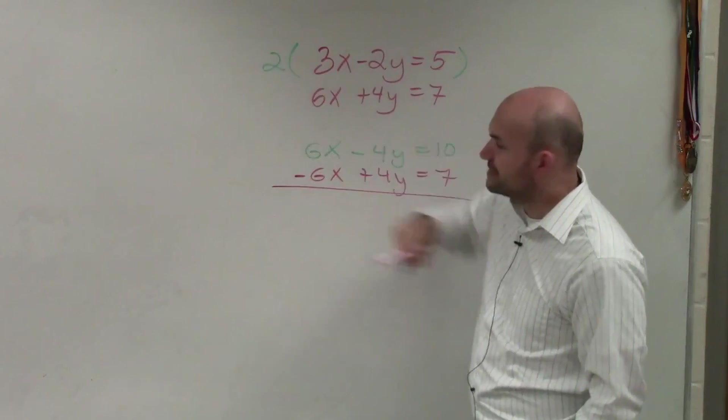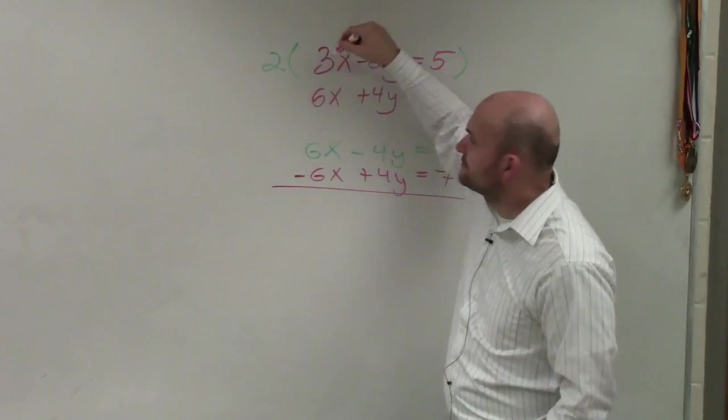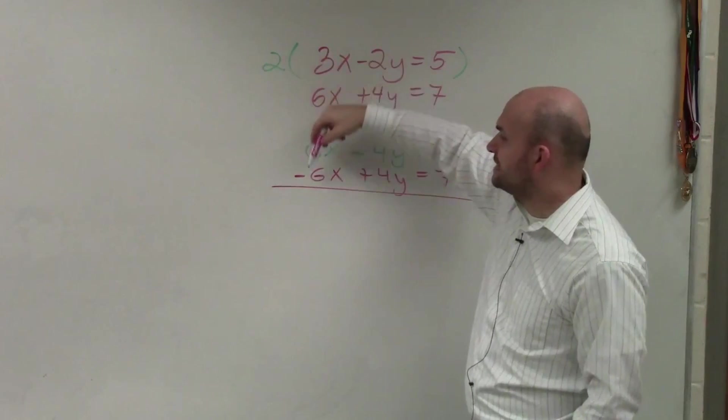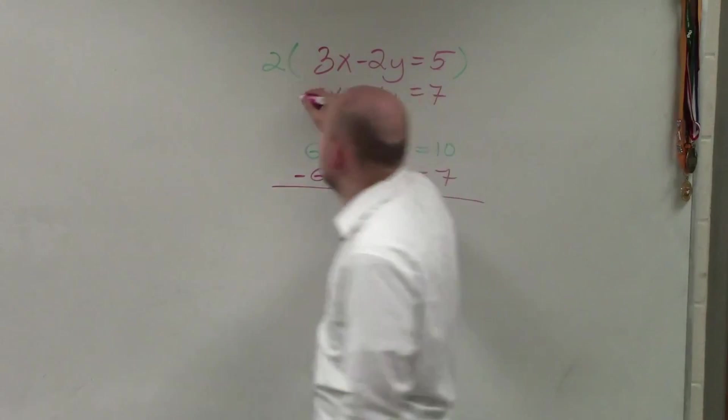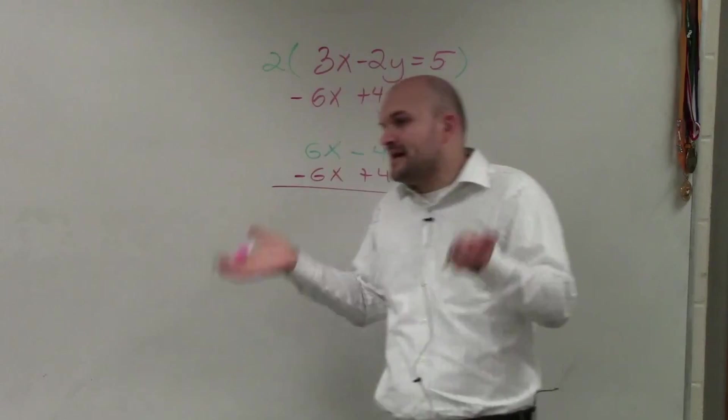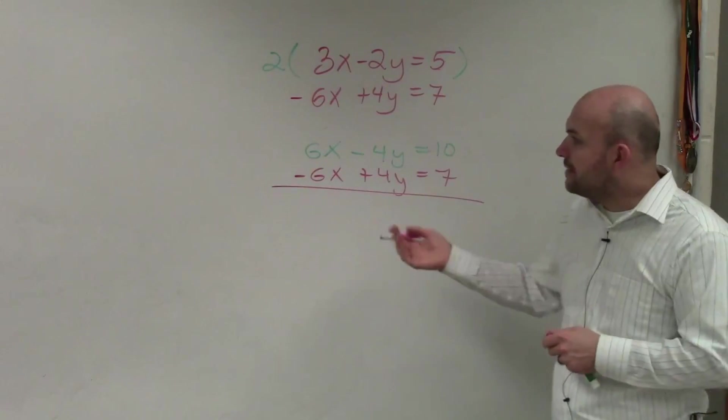Because then that would be negative 6, positive 6. But you already have a negative 6, so make one positive, one negative, and that's fine. Now, let's go ahead and add them.